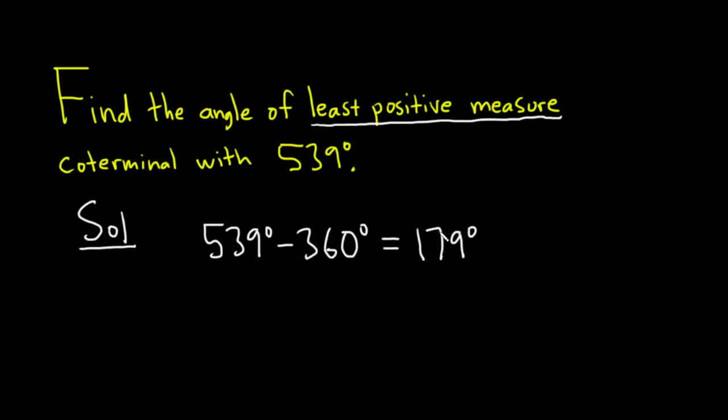Now, if you subtract 360 again, you're going to get a smaller angle. But we want the smallest positive angle. So if you subtract 360, you'll get a negative angle. So this is going to be the answer because this is the smallest possible angle that is coterminal with this one here.